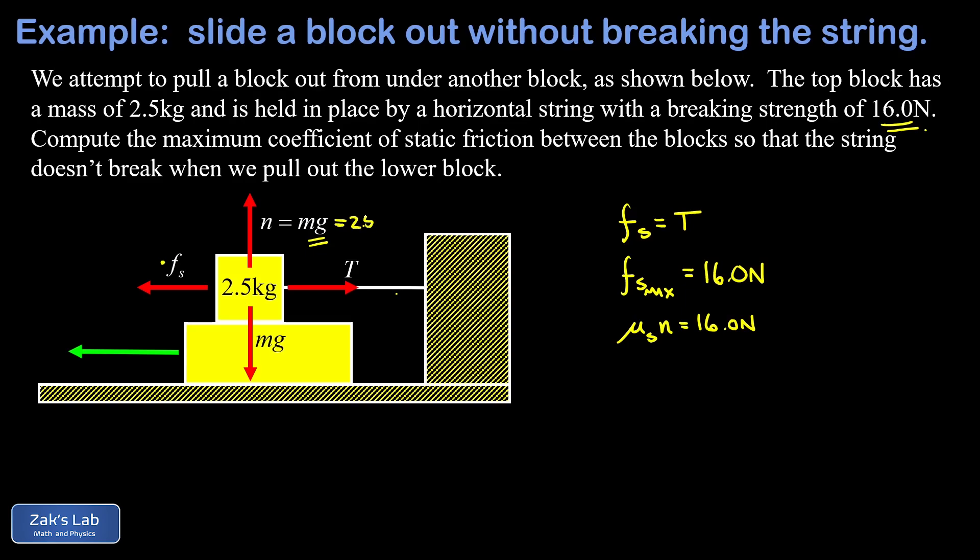In the diagram. So I have a mass of 2.5 kilograms, g is about 9.8 meters per second squared, and so it turns out the normal force is 24.5 newtons. We go ahead and plug this in.